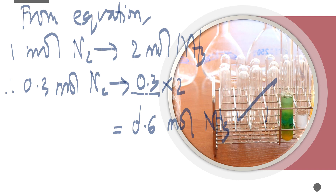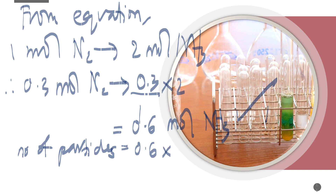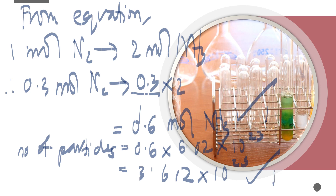The last step: since the question asks for number of particles, use: number of particles = number of moles × Avogadro's constant. Number of particles = 0.6 × 6.02 × 10²³ = 3.612 × 10²³ particles of ammonia. Avogadro's constant is given in the question. This is one mark.